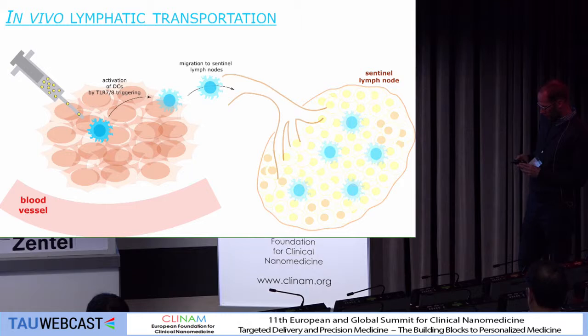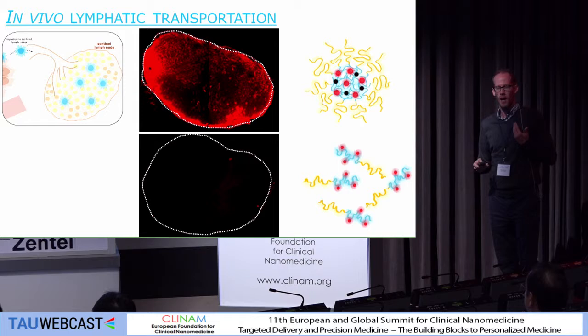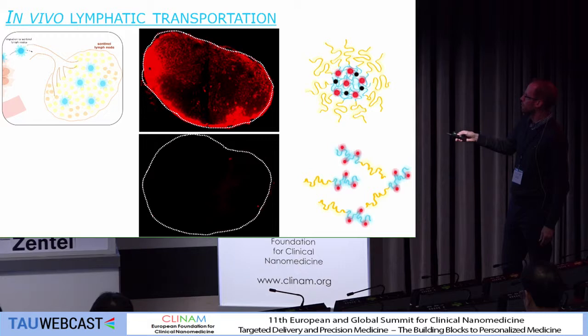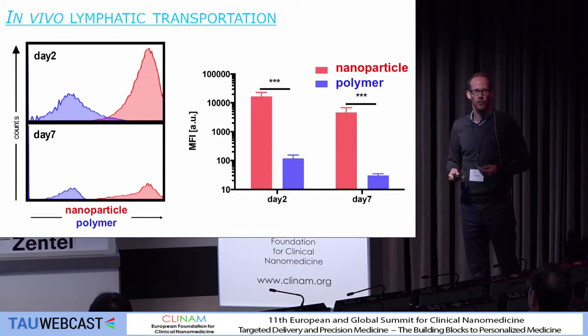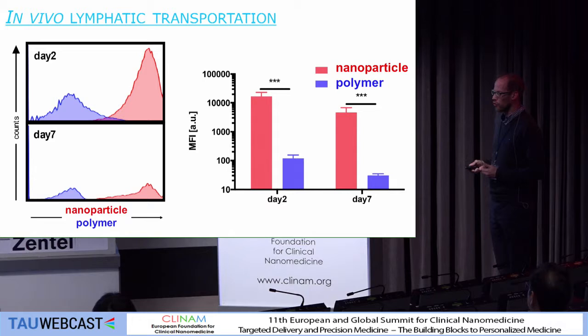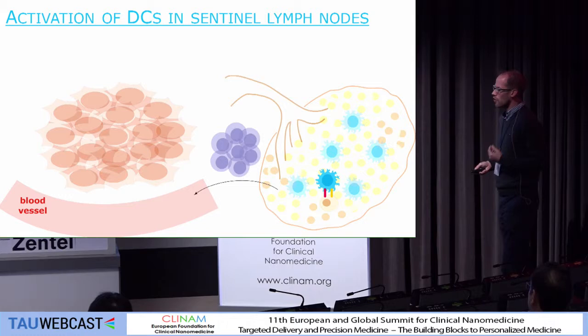Are these particles also transported to lymphoid tissue? Yes, they are. If you inject these particles subcutaneously, they massively translocate to the draining lymph nodes. Whereas if you take polymers that are hydrophilic, prepared from the same type of material, they are barely transported to the lymph nodes. This is not a kinetic phenomenon, because if you do this experiment at two different time points, at every time point, particles are outperforming soluble polymers by several orders of magnitude. So you really need a particle-like or amphiphilic-like system to target lymph nodes. With soluble polymers, you're not getting there.